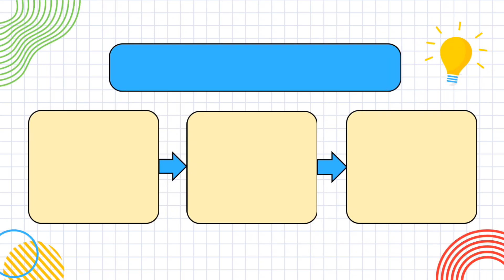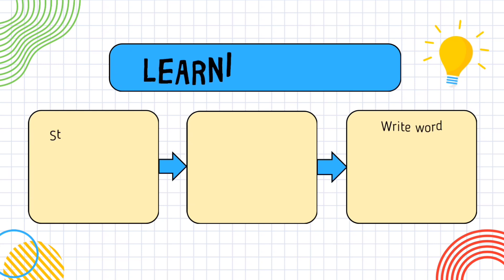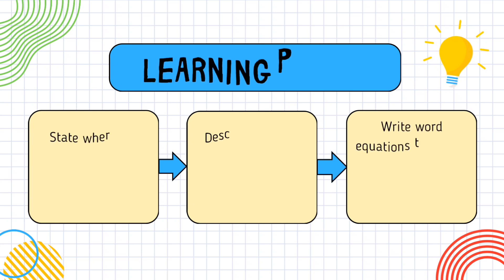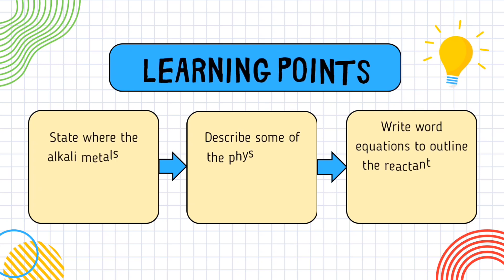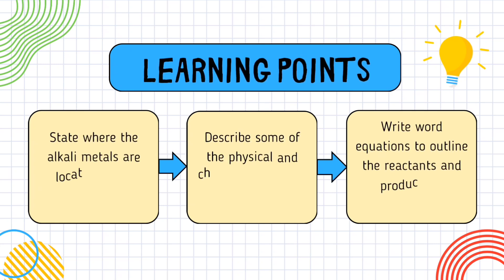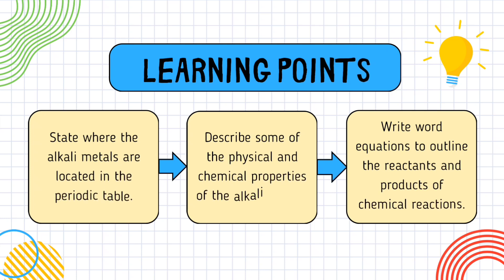Before beginning, we must learn the objectives of this particular chapter. We have to state where the alkali metals are located in the periodic table, describe some of the physical and chemical properties of the alkali metals, and write equations to outline the reactants and products of chemical reactions.